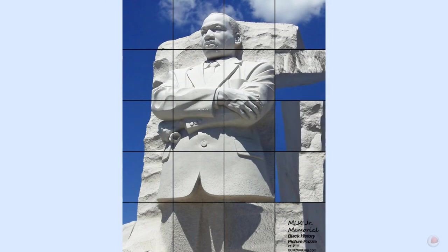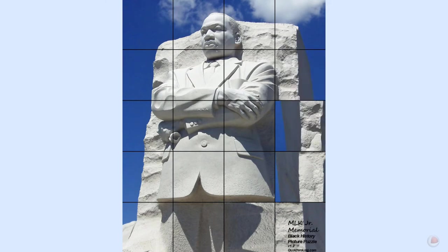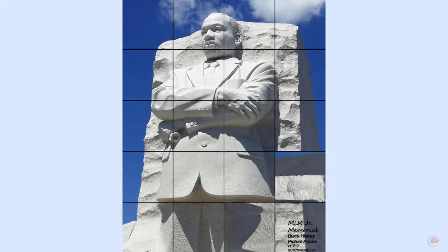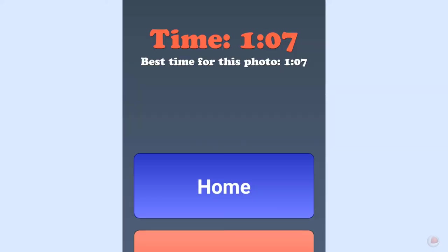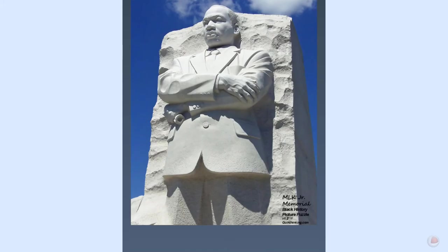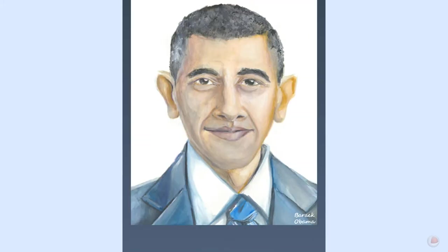Then it's scrambled automatically. All you have to do is arrange the pieces until we get to the finish. Boom — there we go. We have finished with Martin Luther King Jr. — a minute and seven seconds. That's not too bad.